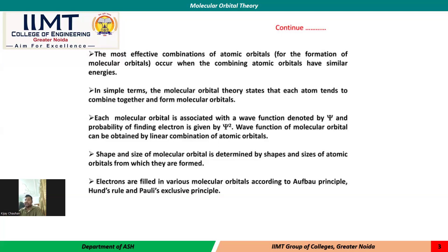The wave function of molecular orbitals can be obtained by linear combination of atomic orbitals — additive for bonding molecular orbitals, and subtractive in the case of anti-bonding molecular orbitals. The shape and size of the molecular orbital is determined by the shapes and sizes of the atomic orbitals from which they are formed. Electrons are filled in various molecular orbitals according to Aufbau's principle, Hund's principle, and Pauli's exclusion principle.